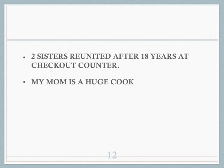Here's a real one — someone said to me, 'My mom is a huge cook.' I thought that was funny. The ambiguity here is semantic: is the person huge, or are they just an avid chef? So there are a lot of examples — try to figure out if it's the order, the semantics, or both.